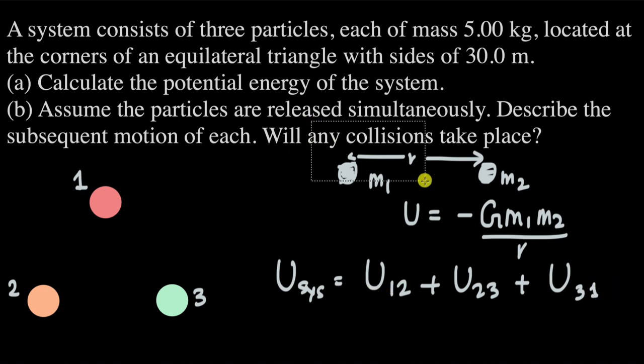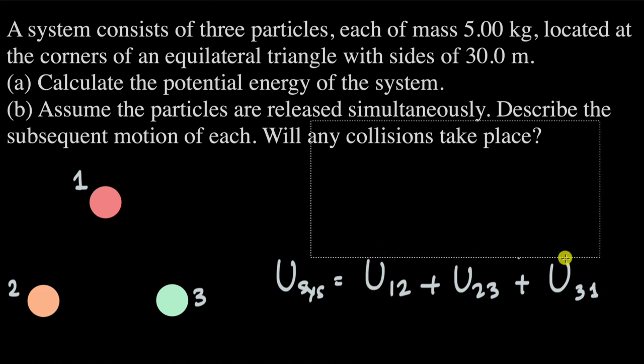Let's calculate that. For the first and second particle, the potential energy is -G m² / R, since the masses are the same (m1 m2 becomes m²). R is 30, but let's write R for now, and we'll add this three times.